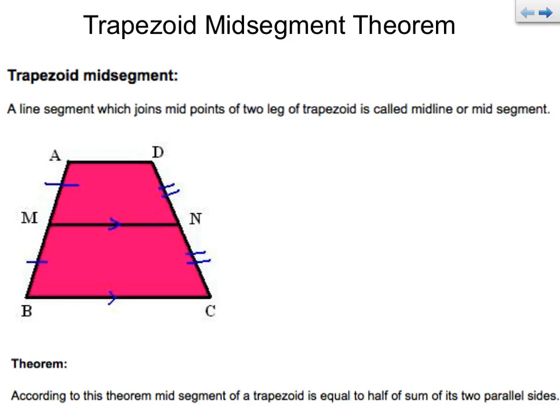Trapezoid midsegment theorem. It's in a trapezoid, it's in the middle, and it's a theorem. So first of all, a trapezoid midsegment is a line segment which joins the midpoints of the two legs of a trapezoid, and it's called the midline or the midsegment.